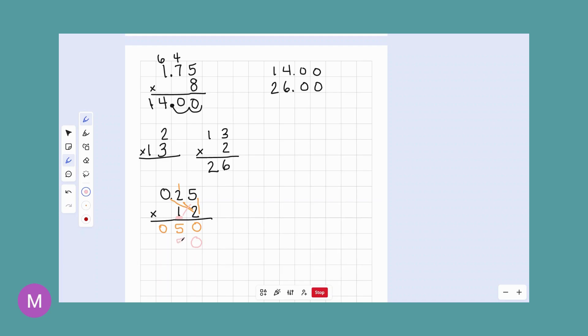And then we had one, two decimal places, no decimal places. So in our answer, we go in one, two, and we earned $3 for the candy canes.